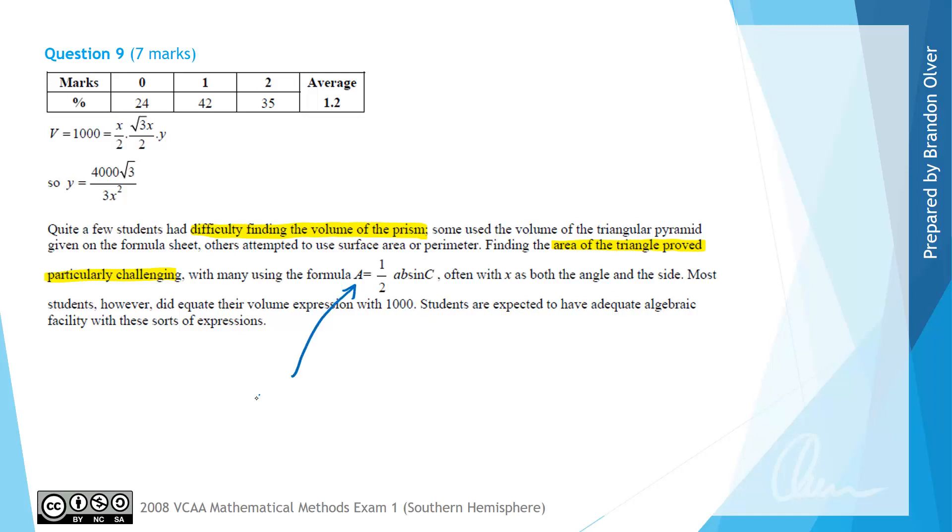If we have a look at what that would have looked like, the area of the triangle is half times a times b, which is just x times x, the two side lengths, times sine of 60 degrees, because that's the angle inside an equilateral triangle. We have an exact value, so we'd have half x squared times sine of 60, which is root 3 over 2. Therefore that area would equal root 3x squared over 4, which is what the other calculation eventually resulted in. Most students did equate the volume expression with 1000, which was good to see. A reminder that students are expected to have adequate algebraic facility to deal with these sorts of expressions.